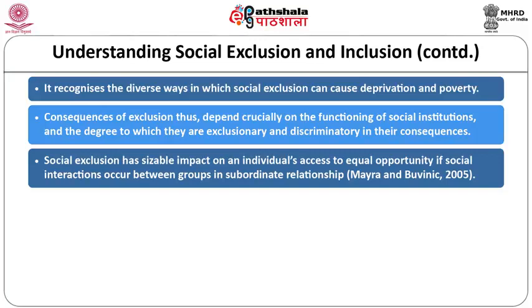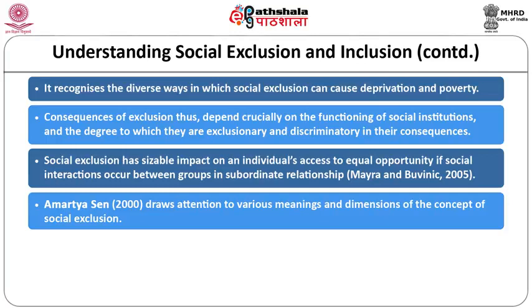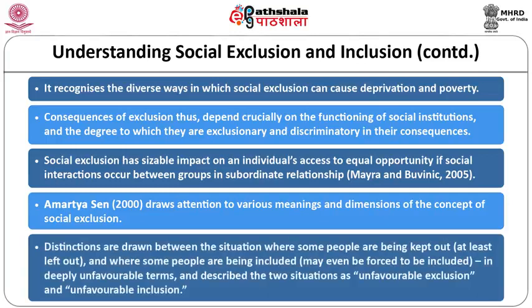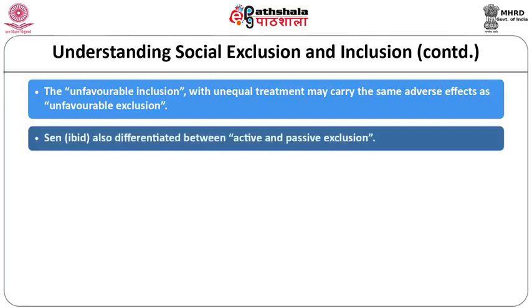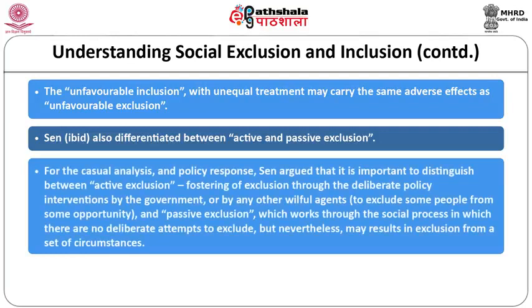Social exclusion has a sizable impact on an individual's access to equal opportunity when social interactions occur in subordinate relationships. Amartya Sen draws attention to various meanings and dimensions of social exclusion. He distinguishes between situations where some people are kept out and where people are included on deeply unfavorable terms, describing these as unfavorable exclusion and unfavorable inclusion. Unfavorable inclusion with unequal treatment may carry the same adverse effects as unfavorable exclusion. Sen also differentiated between active and passive exclusion.